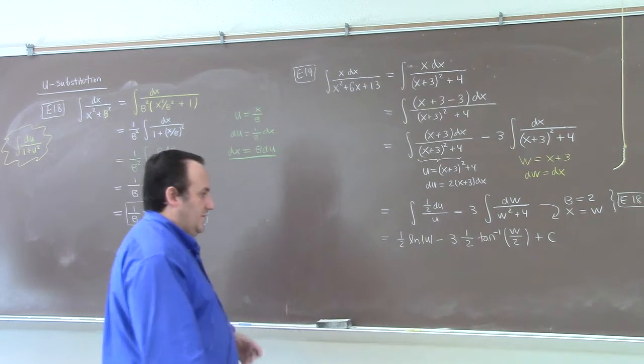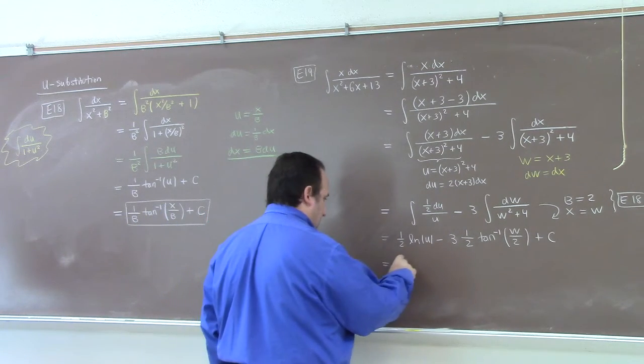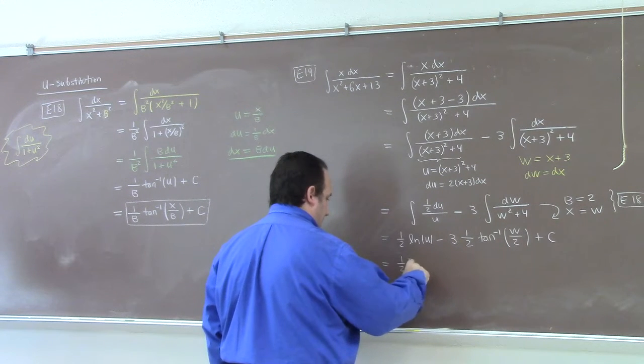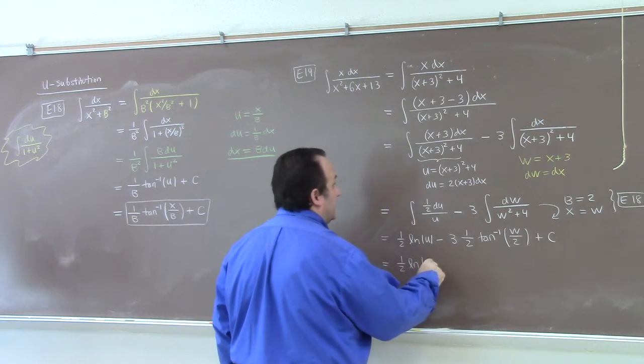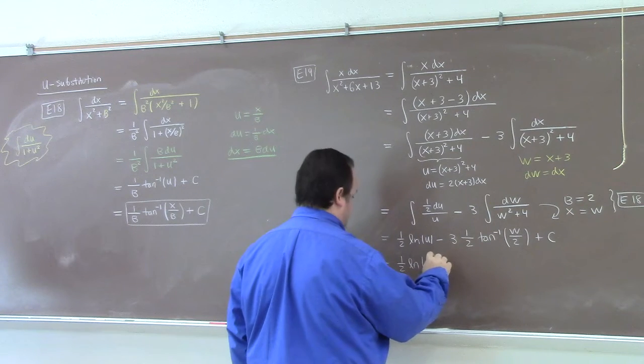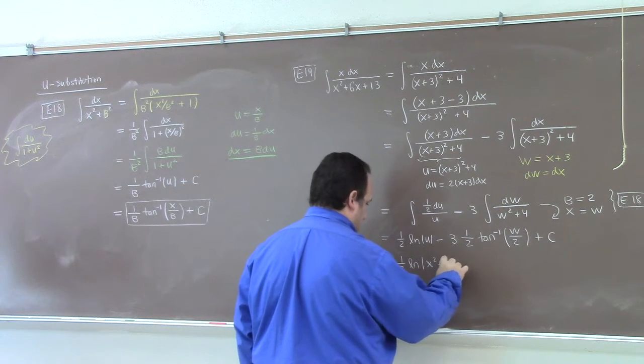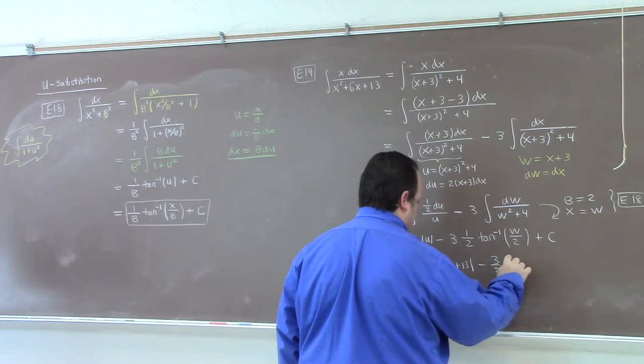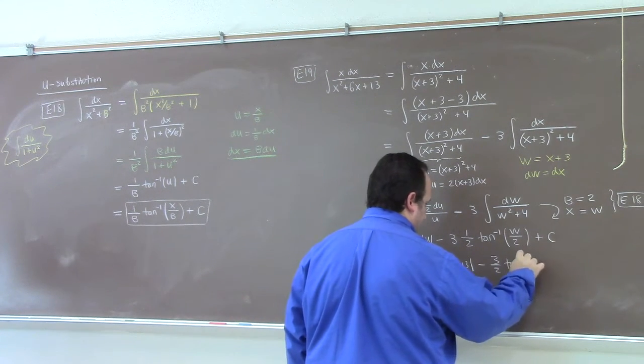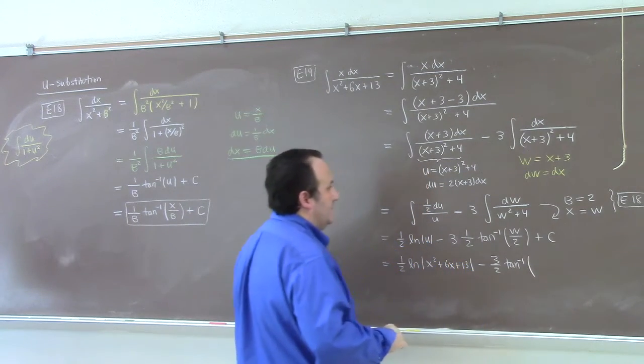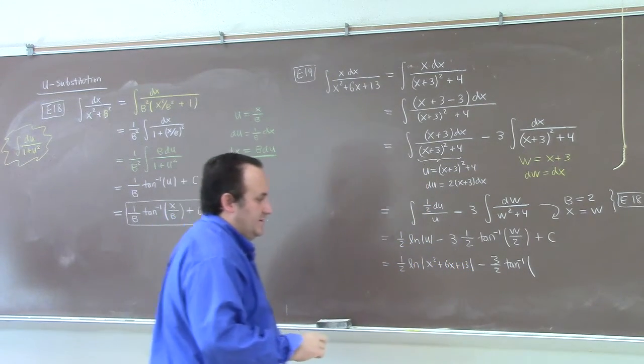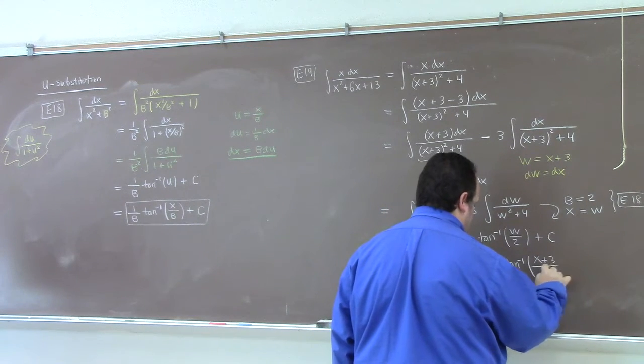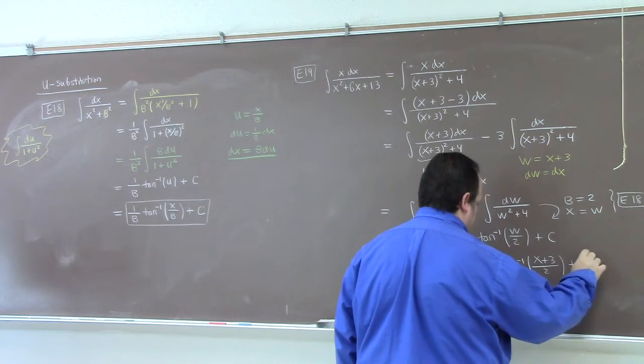Now, okay, so what we have then is 1 half the natural log of the absolute value of x squared plus 6x plus 13 minus 3 halves inverse tangent. What was w? What was w? W was x plus 3, right? x plus 3 divided by 2 plus a constant.